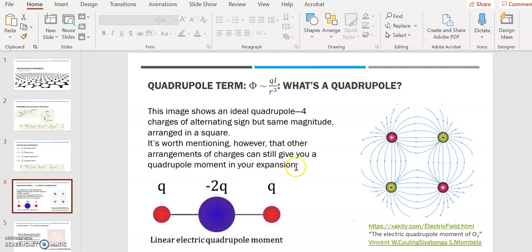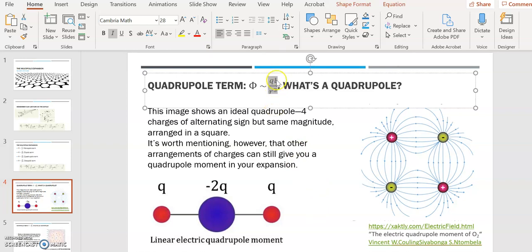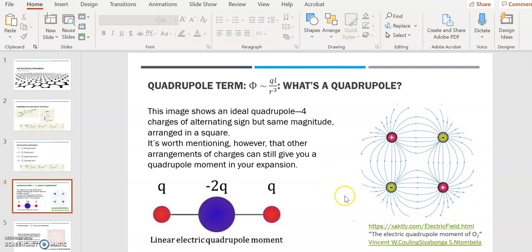It's worth mentioning that other arrangements of charges, and different numbers of charges even, can still give you a quadrupole moment in your expansion. For example, if you have this right here, where you have two Q in the center, and then oppositely charged Qs on either side, that's called a linear electric quadrupole moment. And that'll give you a term that's proportional to QL over R cubed. So basically, it's just the power of R here that we're worried about for the quadrupole, but if you're wondering where the name came from, it might look like this configuration of charges on the right, and that's usually the first picture that pops into people's heads. But any kind of multipole expansion, anything that has that proportionality to QL over R to the third, that's going to be our quadrupole term.